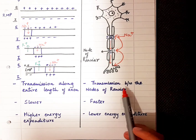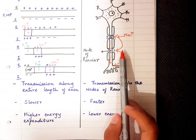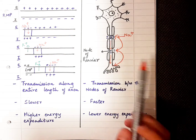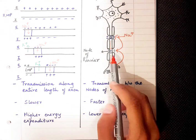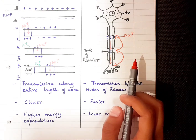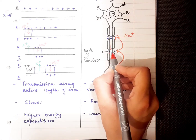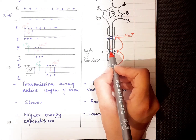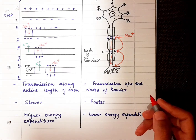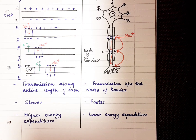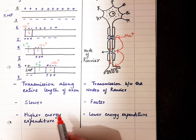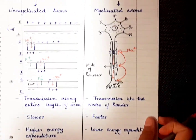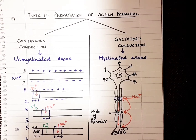Some characteristics of saltatory conduction: transmission is between the nodes of Ranvier, with the action potential leaping from one node to the next. It is faster because fewer ion channels need to be opened — only a small portion of the axon gets depolarized at any time. There is also lower energy expenditure because fewer channels are opened, so less ATP has to be used by the sodium-potassium pumps to maintain the resting state. These are the key differences between continuous and saltatory conduction and the two types of propagation of action potential.